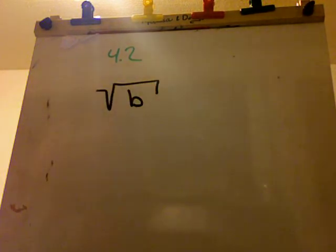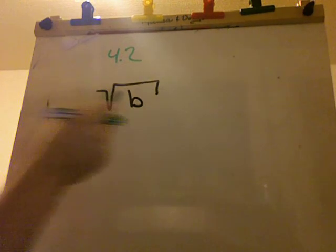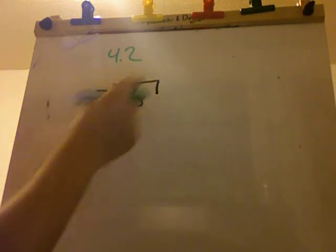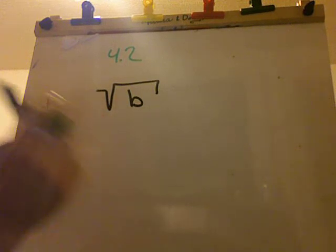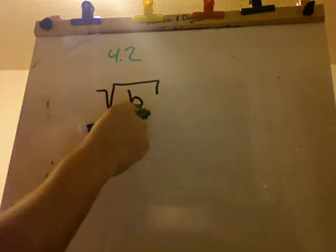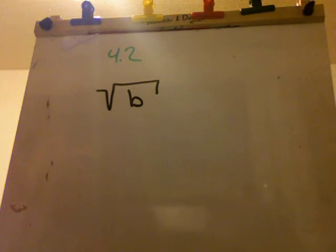Okay, so say I've got the square root of b. The square root means that you're just finding one number that when you multiply it by itself, you end up with this number, b.